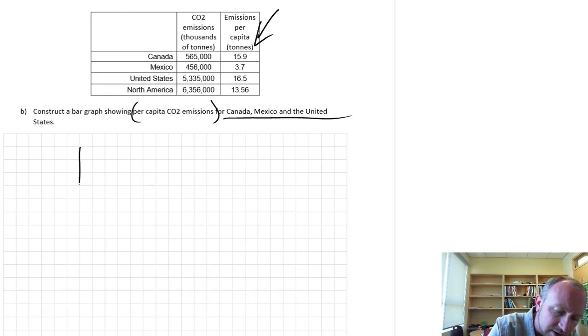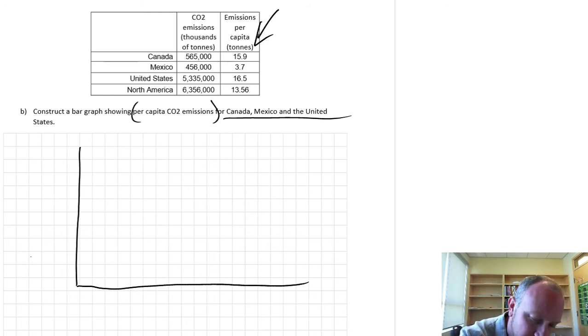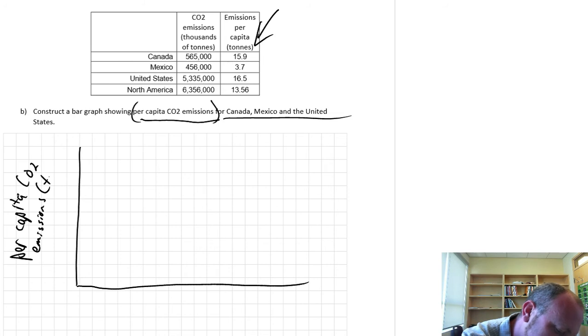So again, I'm going to start off with my y and x-axes. Here now, my y-axis is this per capita emissions, so per capita CO2 emissions. And now we're measured in tons. And along the x-axis again, this is still my individual country. So I'll write here Canada, Mexico, and the US.